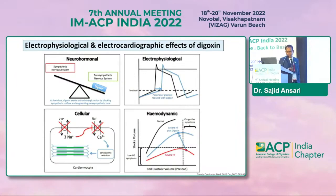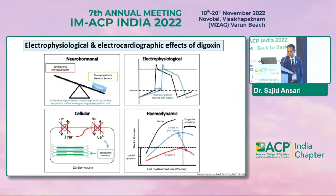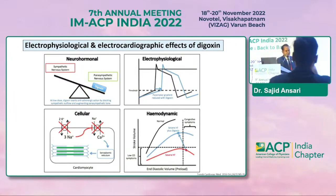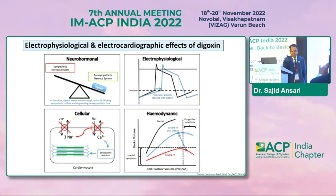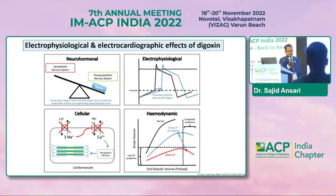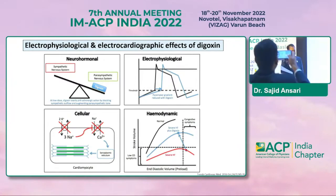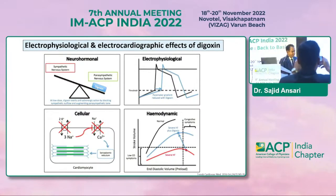Coming to the electrophysiological and electrocardiographic effects, digoxin has effects on the neurohormonal axis, electrophysiological axis at the cellular level, and at the hemodynamic level. At the cellular level, digoxin inhibits the enzyme sodium-potassium ATPase. This in turn causes excess sodium in the cardiomyocytes, which leads to diminished extrusion of calcium from the cardiomyocyte. The cardiomyocyte becomes overloaded with calcium, and this causes increased force of contraction.